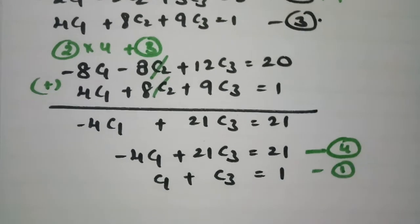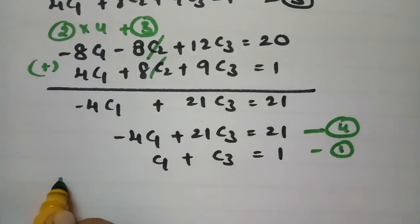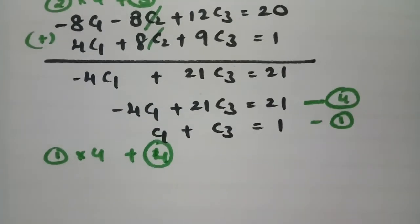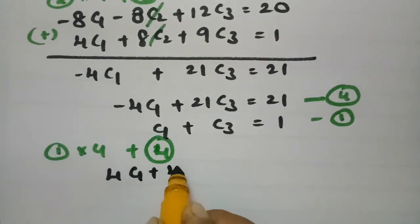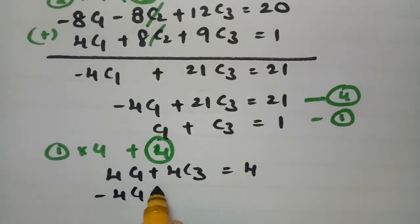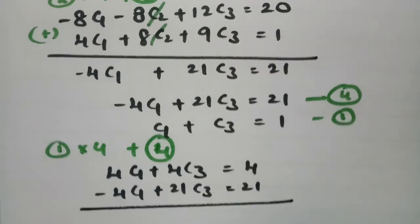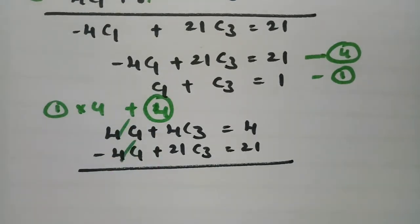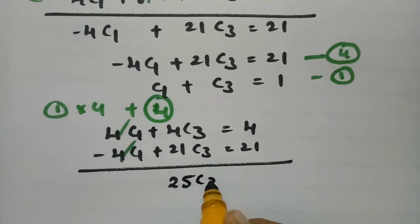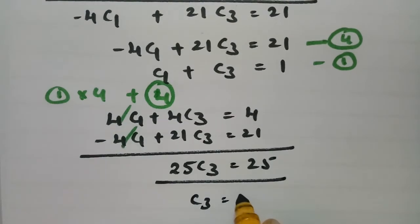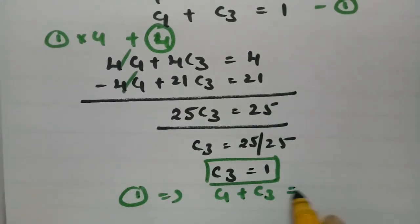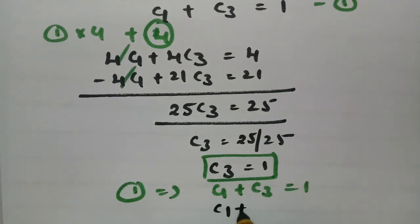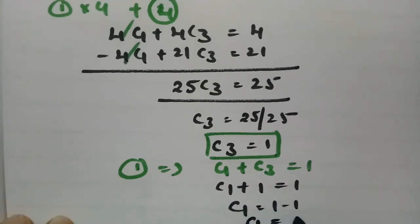Now solving equations 1 and 4: multiplying equation 1 by 4 gives 4*c1 plus 4*c3 equal to 4. Adding equation 4 (minus 4*c1 plus 21*c3 equal to 21), c1 cancels, giving 25*c3 equal to 25, so c3 is equal to 1. Substituting back into equation 1: c1 plus 1 equal to 1, so c1 is equal to 0.